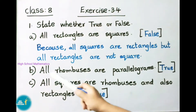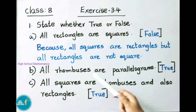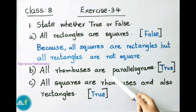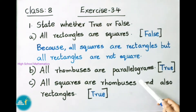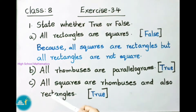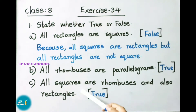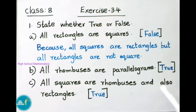Question B: All rhombuses are parallelograms. Yes, it is true. Question C: All squares are rhombuses and also rectangles. Yes, it is also true.